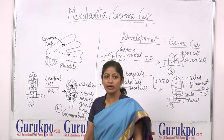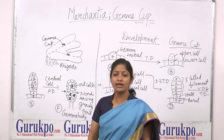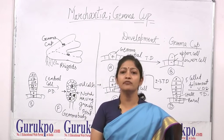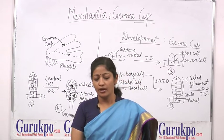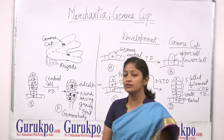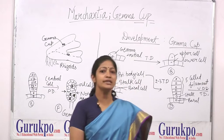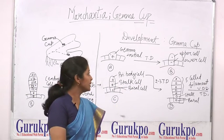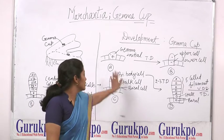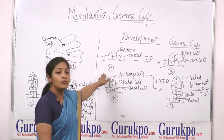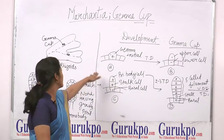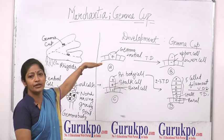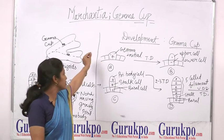On this midrib, cup-shaped structures are formed — these are called gemma cups. These gemma bodies are mainly related to vegetative propagation. We will now discuss how these gemma bodies develop on the Marchantia thallus.